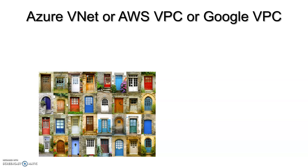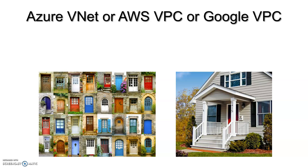If you have only one door to access a house, it's much easier to focus security on that single point. Similarly, on the cloud, if you have 20 VMs, do you want to generate public IPs for all of them, or keep them private and open just a single door? That's what VNet and VPC are all about.